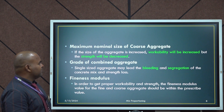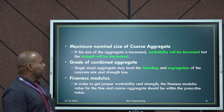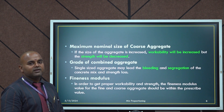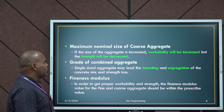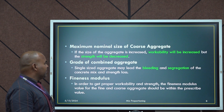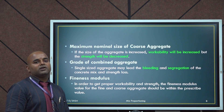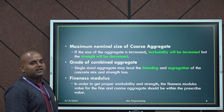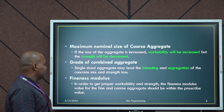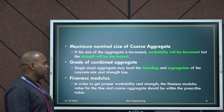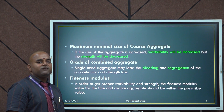Maximum nominal size of coarse aggregate: if the size of the coarse aggregate is increased, workability will be increased, but on the other hand the strength will be decreased, so the size of the aggregate must be at a nominal size. Regarding graded combination of aggregate, single size aggregate may lead to bleeding — bleeding is the collection of water at the top surface — and segregation is the movement of water with cement from the formwork. Fineness modulus: in order to get proper workability and strength, the fineness modulus value should be fine.